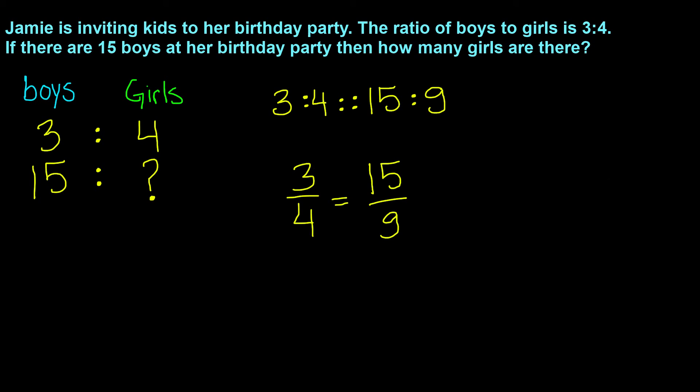So, if I multiply 3 by 5, I get 15. So, I have to do the same to the denominator. I have to multiply 4 by 5 as well. When you multiply 4 by 5, now we know that our new denominator is 20.